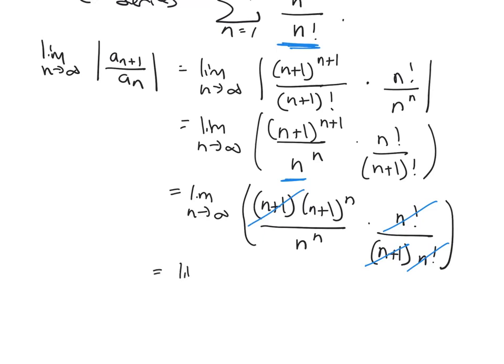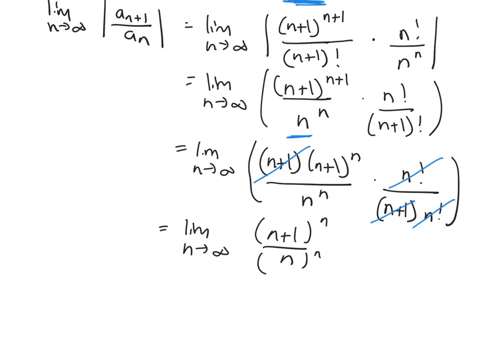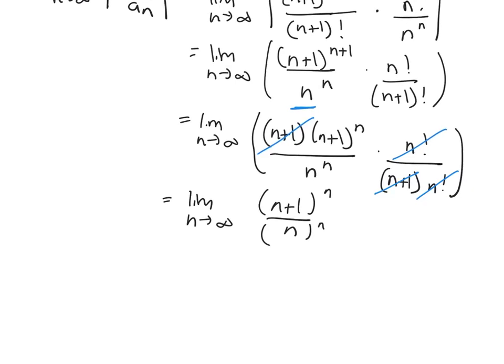So what am I left with? n plus 1 over n to the n. They both have the same power, so I can combine them into one power with a fraction, n plus 1 over n to the n.